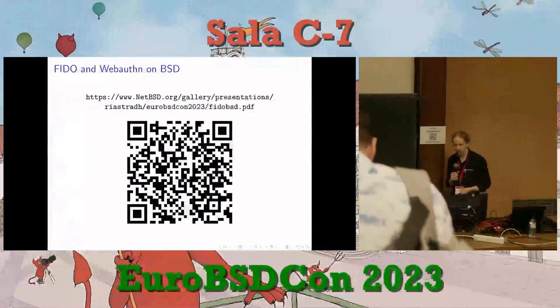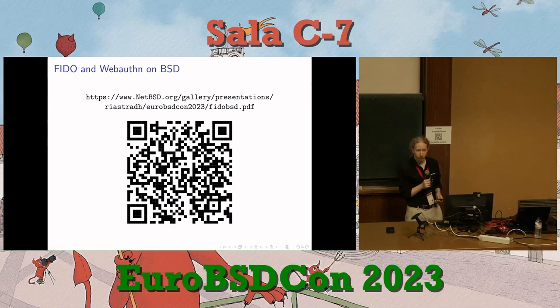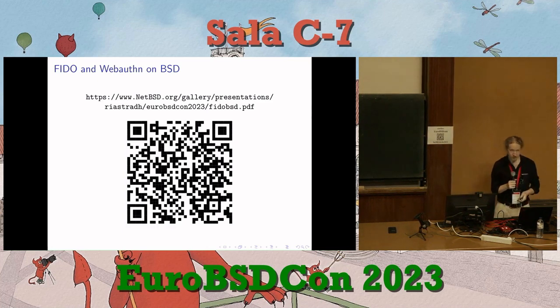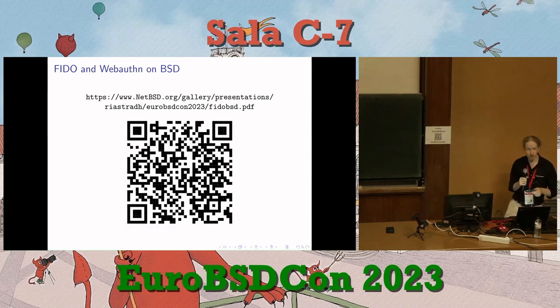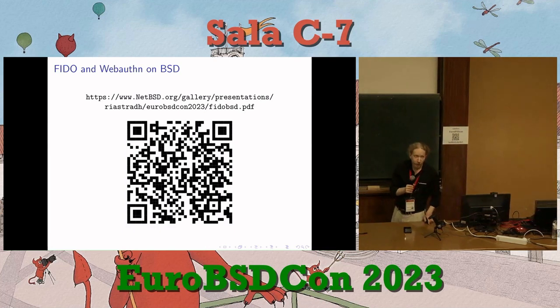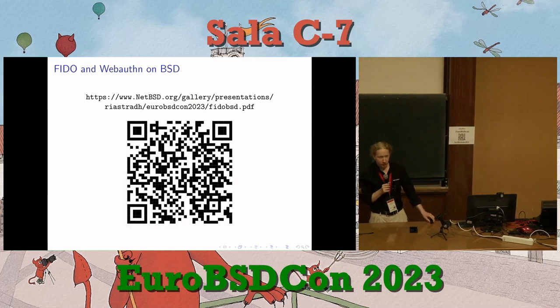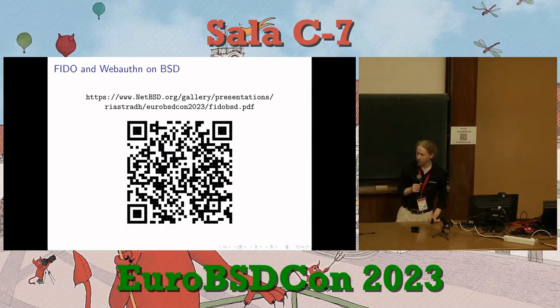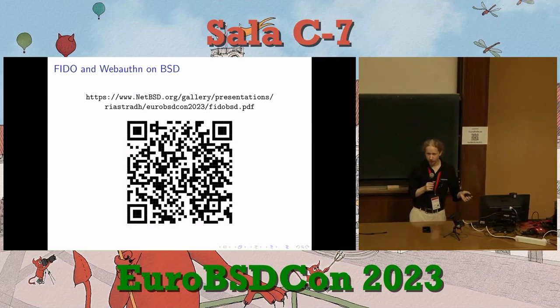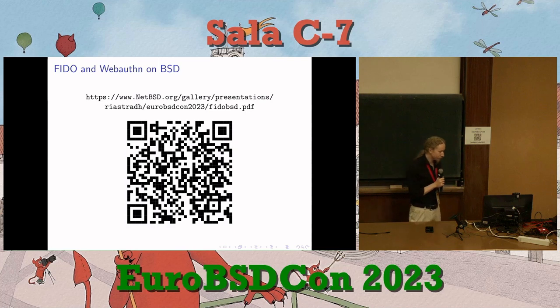This talk is available at the URL shown on the screen. If you want to follow these slides at your own pace, you're welcome to do so — there aren't any major spoilers in the slides. My name is Taylor Campbell. I'm a NetBSD developer and on the NetBSD core team. I've been developing NetBSD for some years, working on various things from networking to cryptography to file systems and whatever else needs to be fixed.